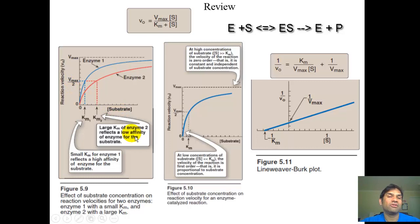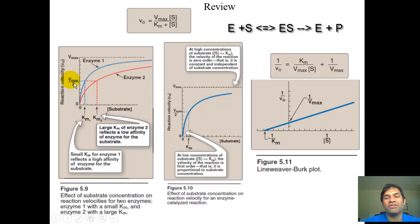Km is the substrate concentration where V equals Vmax over 2. We are interested in attaining Vmax, which is the asymptotic region of the curve, as well as Km — the two key parameters of interest.